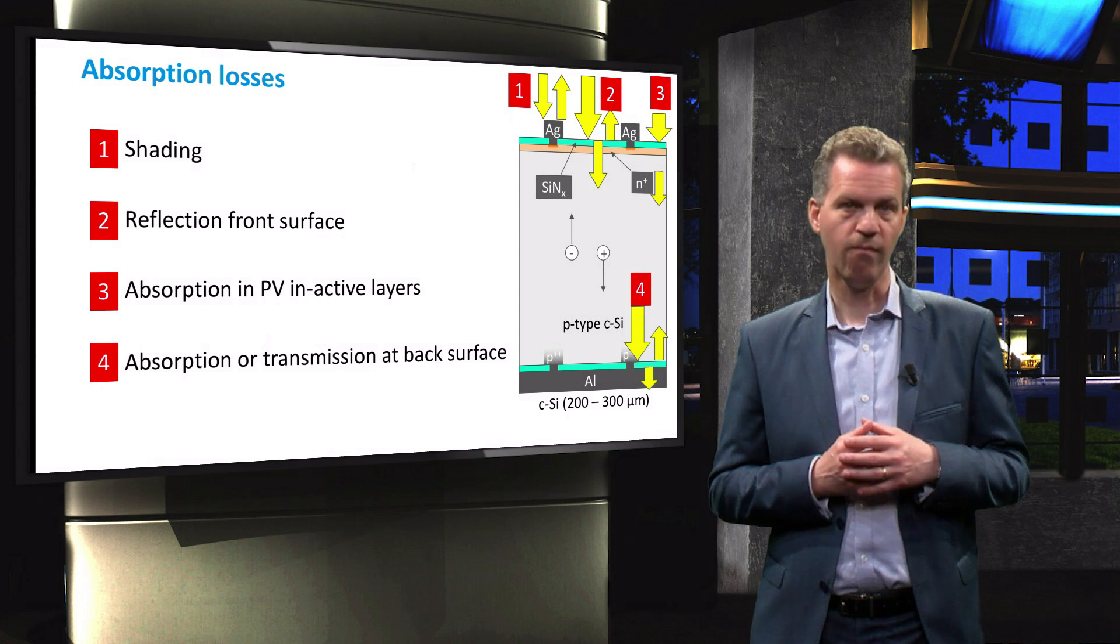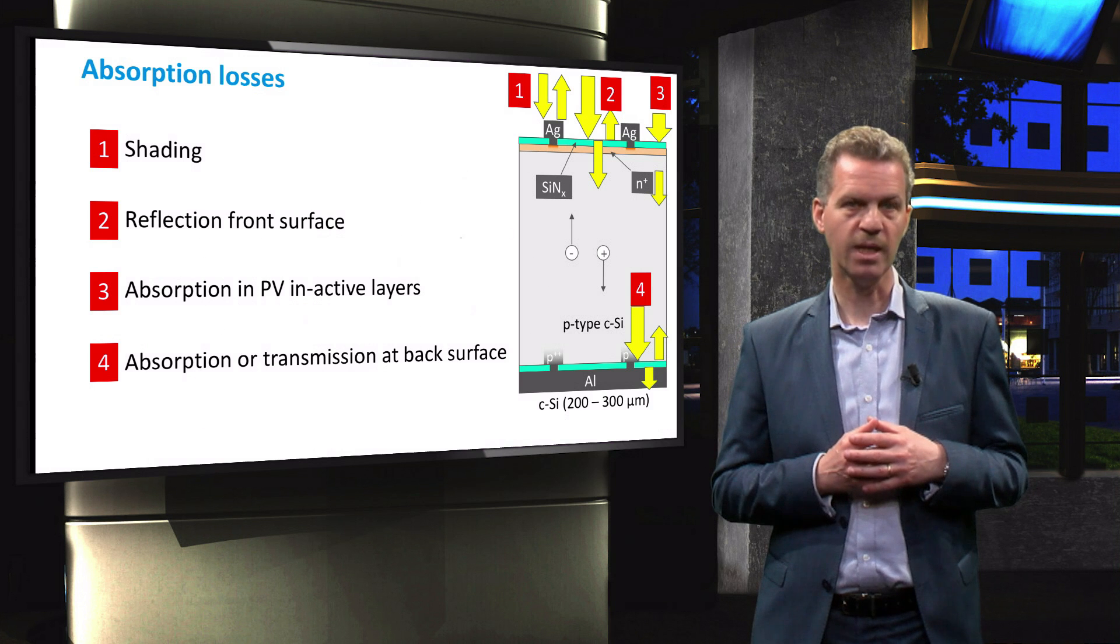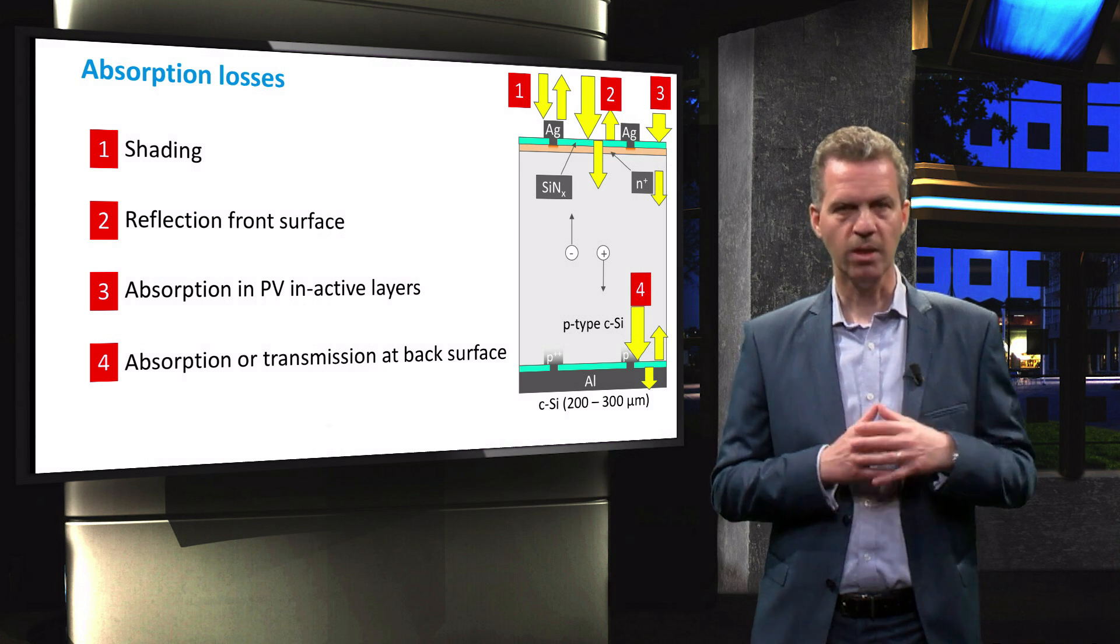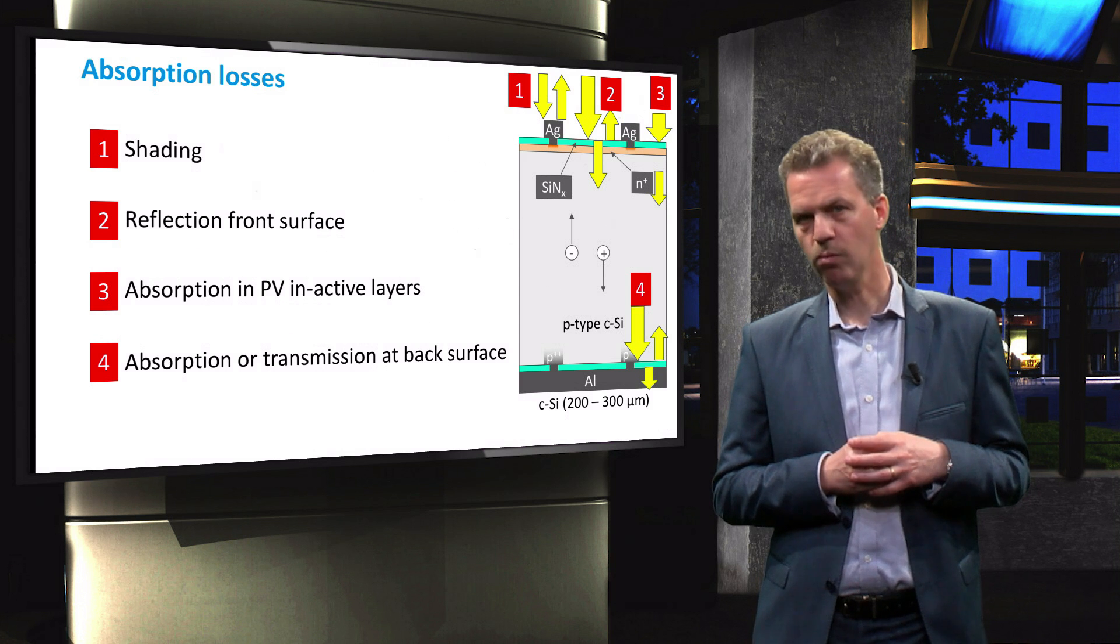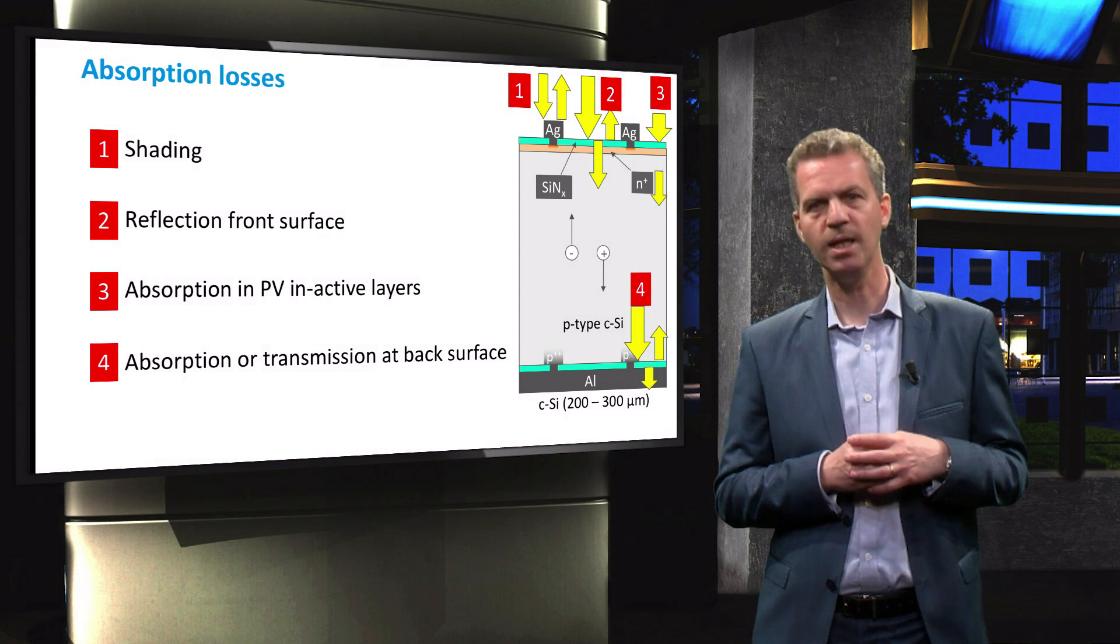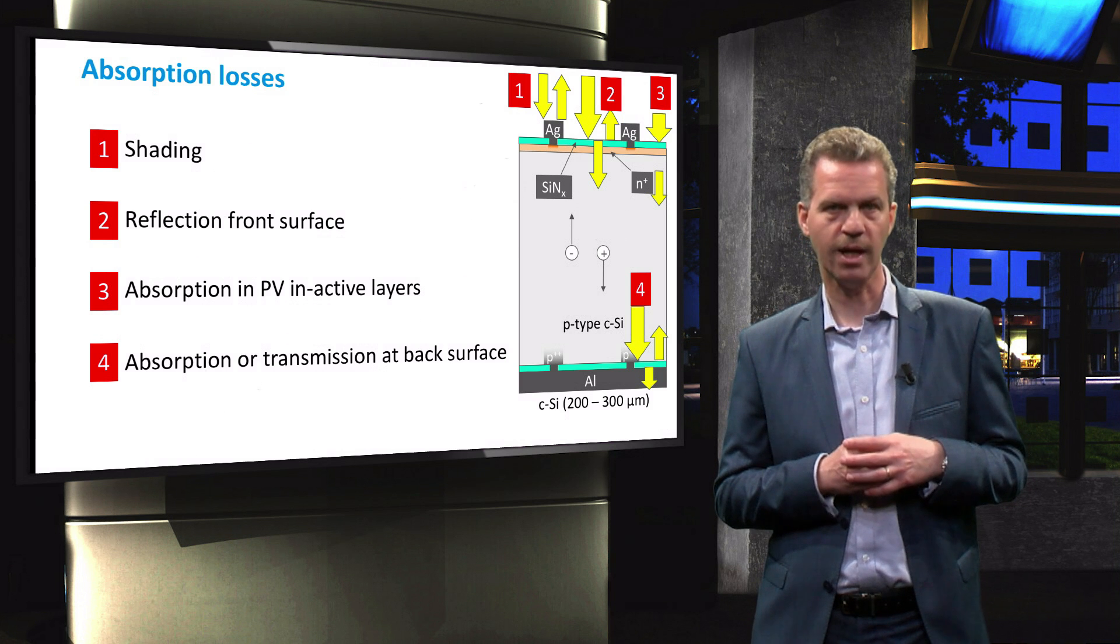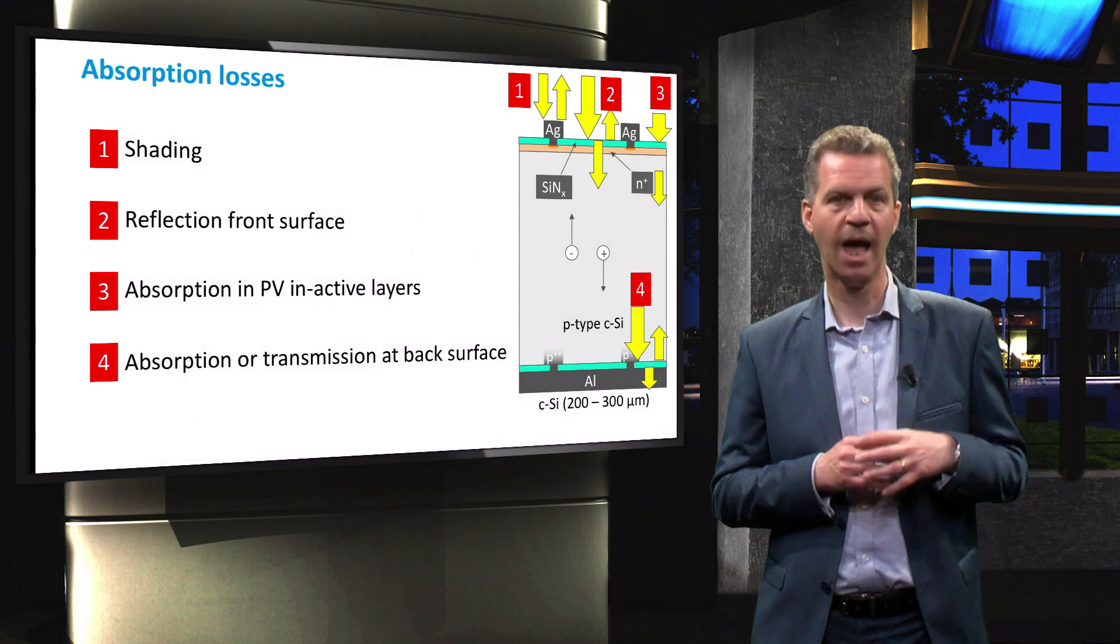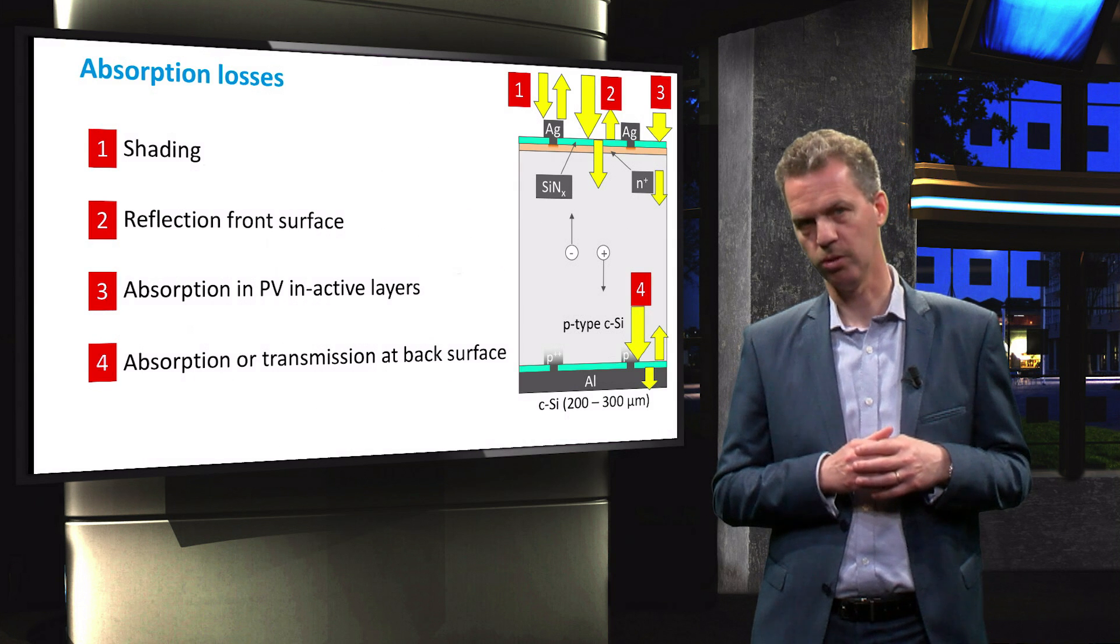The fourth and final optical loss mechanism is by light that is absorbed by or transmitted through the back of the solar cell. We have already discussed the effect of shading by the metallic front contact and now we will focus only on reflection losses and parasitic absorption losses.